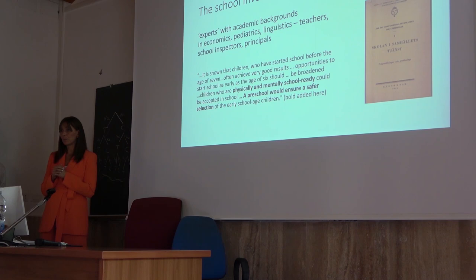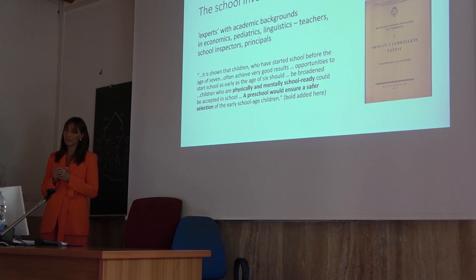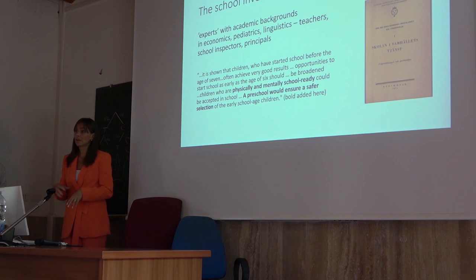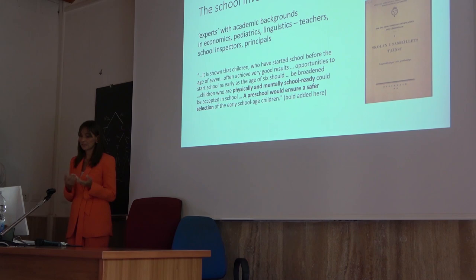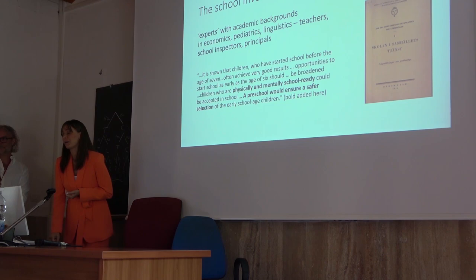They were looking into at what age children should start school — this was a little bit different in Europe and the US at the time. They found that seven, the most common age, worked. But they also said that children who had started school before age seven had often reached very good results, so there should be opportunities for kids who are mature to start early. However, they would have to be physically and mentally school ready. Here the concept of 'school readiness' came up, and a preschool was suggested to ensure a safer selection.